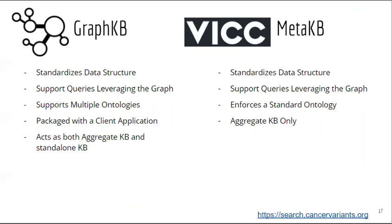Previous work on aggregating knowledge bases has been done by the Variant Interpretation for Cancer Consortium through their excellent Meta Knowledge Base project. There are some similarities between GraphKB and MetaKB as they aim to solve a related problem. While MetaKB is primarily focused on aggregation and standardization, GraphKB's main focus is on supporting matching and the consumption of uncontrolled resources. Both systems standardize the incoming data structure of the source knowledge base, and both support queries that leverage a graph and ontology relationships. However, MetaKB standardizes the vocabulary and terminology of the incoming content to match a particular chosen standard, whereas GraphKB stores the content closer to its source representation. As GraphKB includes a web client and editing capabilities, it can act as both a standalone knowledge base, an aggregate of external knowledge bases, or any combination therein.